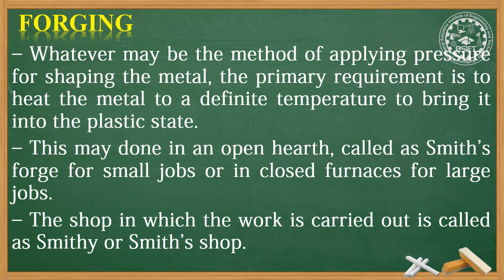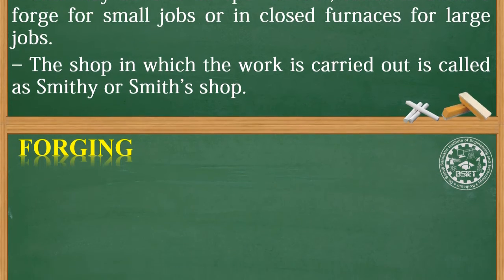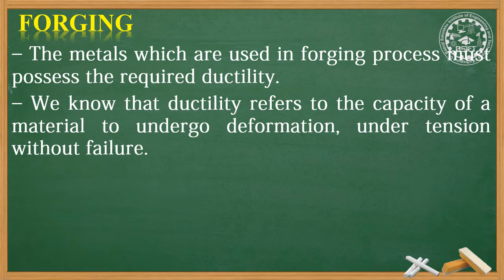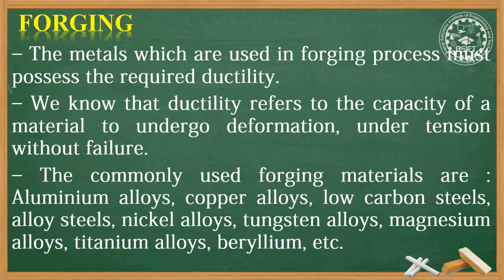The shop in which the work is carried out is called a smithy or smith's shop. The metals used in the forging process must possess the required ductility — that is, the capacity of a material to undergo deformation under tension without failure. The commonly used forging materials are aluminum alloys, copper alloys, low carbon steel, alloy steel, nickel alloy, tungsten alloy, and so on.